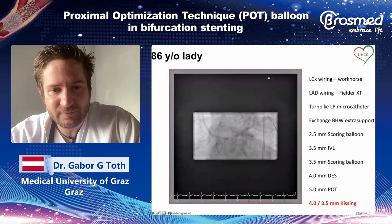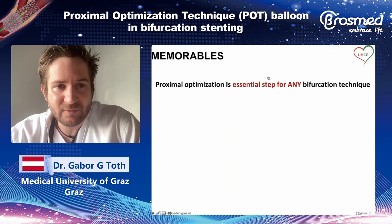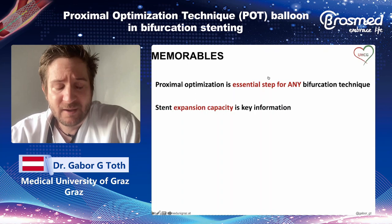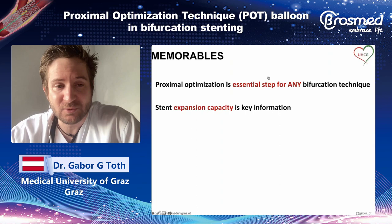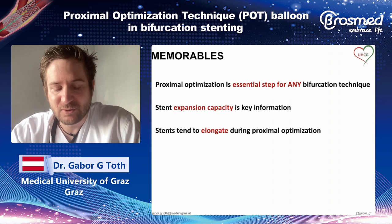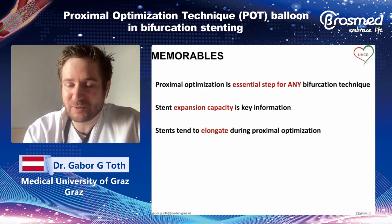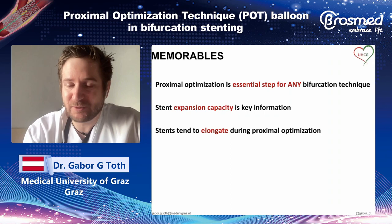We performed kissing with a 3.5 and 4.0 balloon, achieving a very good result in this challenging left main. The key takeaways: proximal optimization is essential for practically any bifurcation technique. You must understand the expansion capacity of your stent prior to the procedure to avoid being limited by wrong stent selection. It's also important to remember that stents tend to elongate during proximal optimization, which matters when you select and position your stent for a given case.